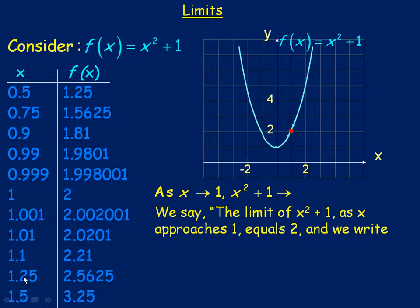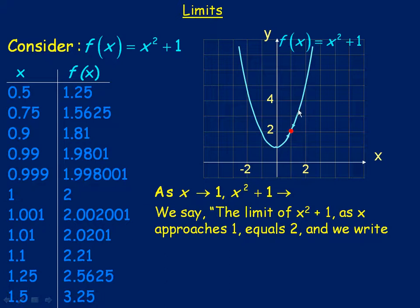If you look at the table at the bottom — 1.5, 1.25, 1.1 — we're starting above 1 and approaching it from above, getting closer and closer to 1. So that's the same as on the graph, starting at about x = 1.5 and tracing along the curve towards the point. We're approaching from the right side. As you approach from the right side, the function values or y values are again getting closer and closer to 2 — y is about 3 there, 2.5, maybe 2.1, getting closer to a y value of 2 at that red dot.